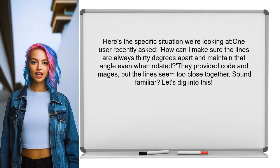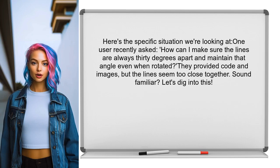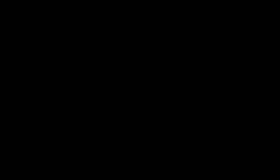Here's the specific situation we're looking at. One user recently asked: how can I make sure the lines are always 30 degrees apart and maintain that angle even when rotated? They provided some code and images, but the lines just seem too close together. Sound familiar? Let's dig into this together and find a solution.